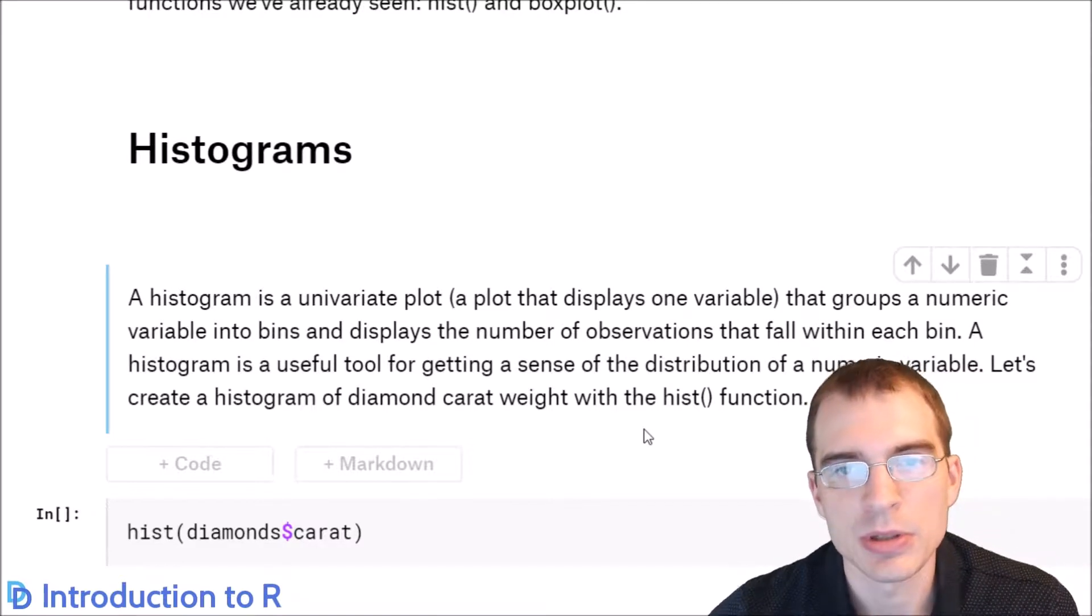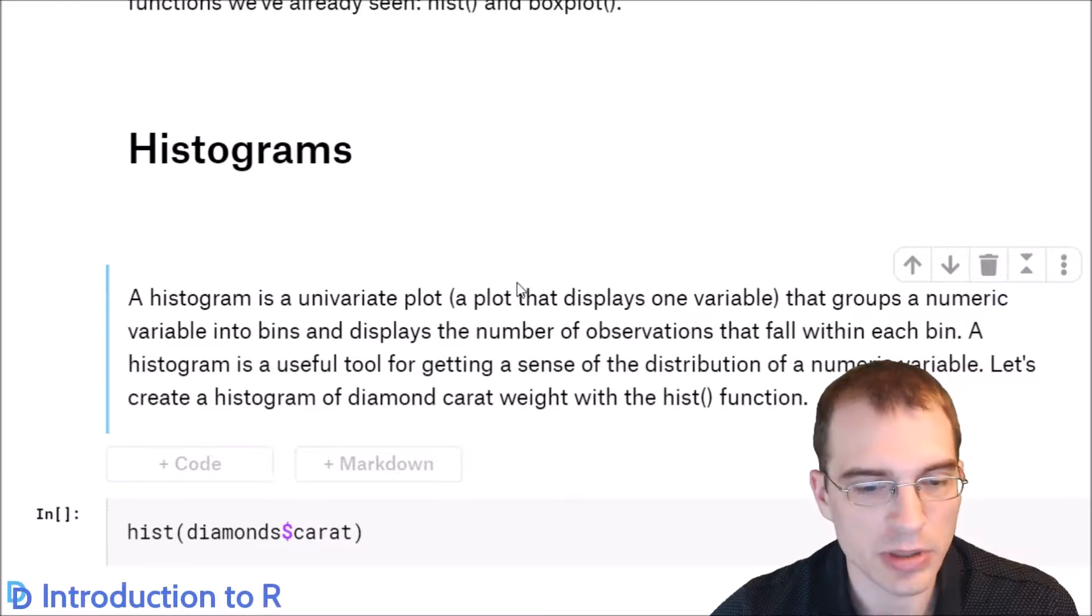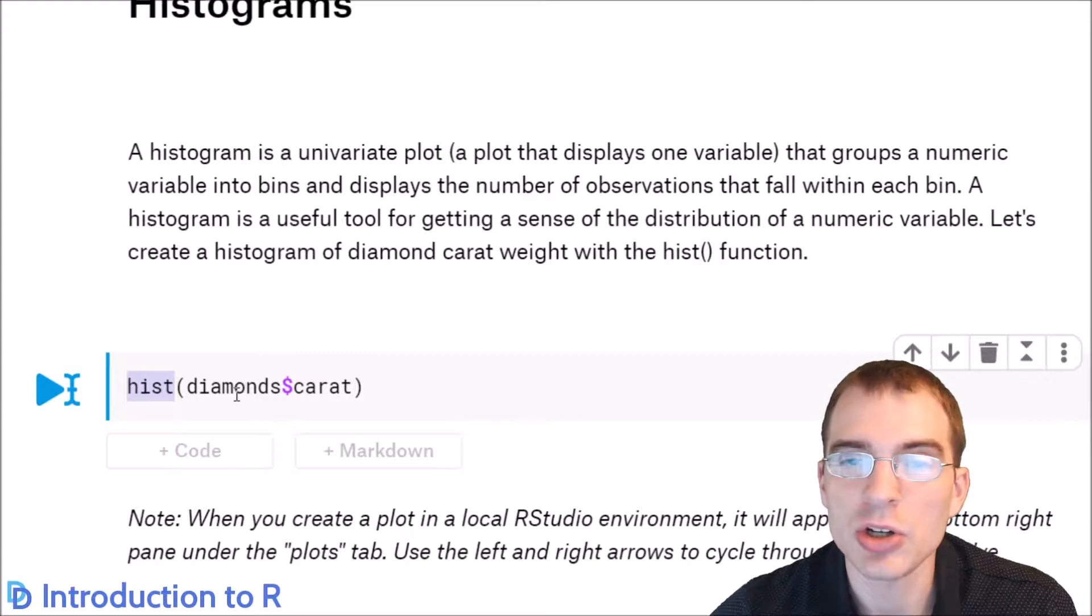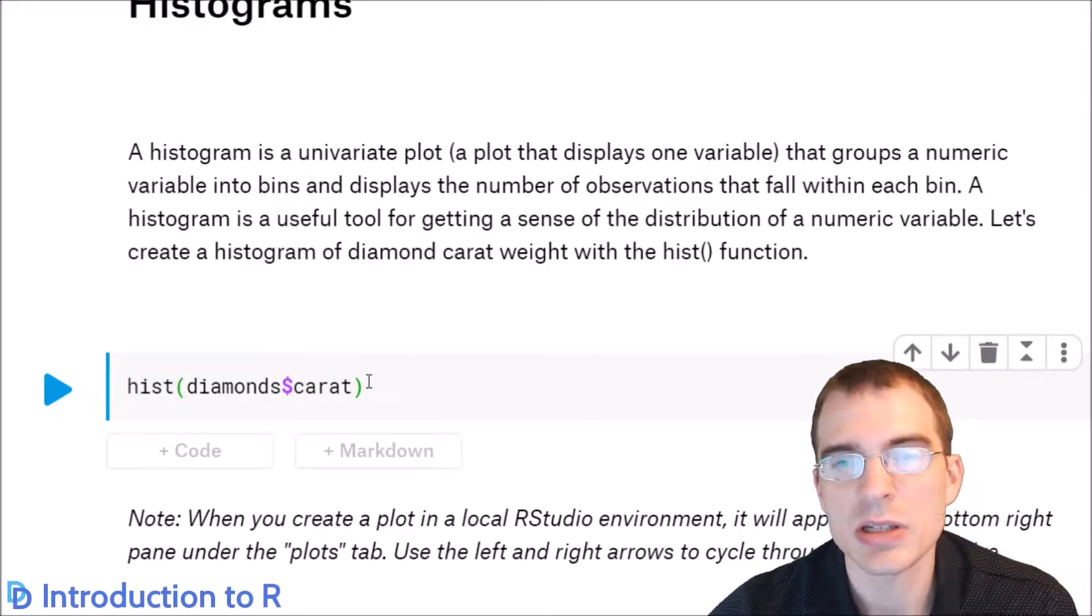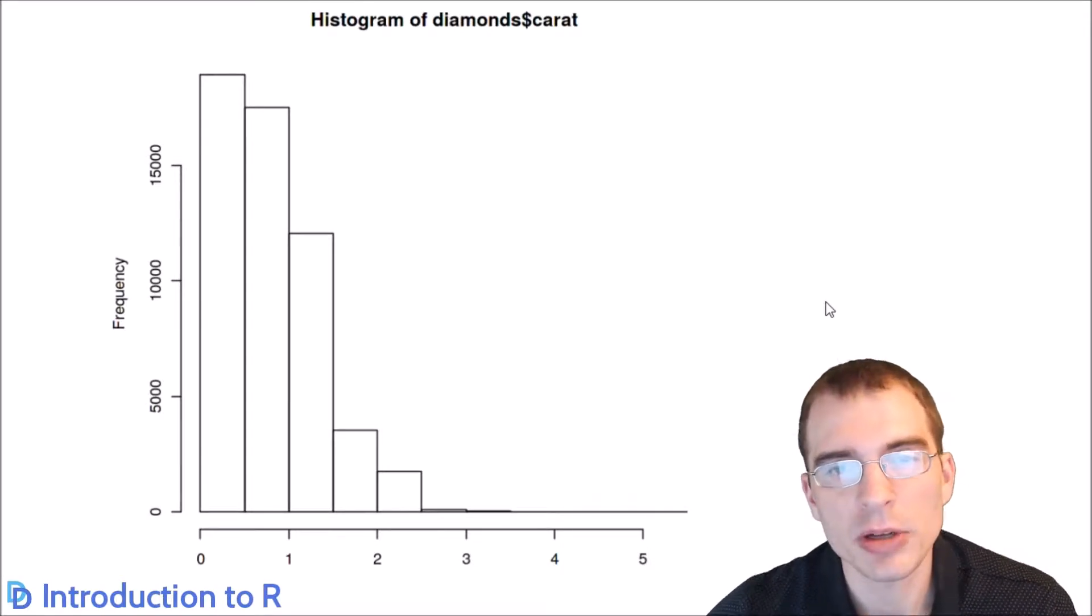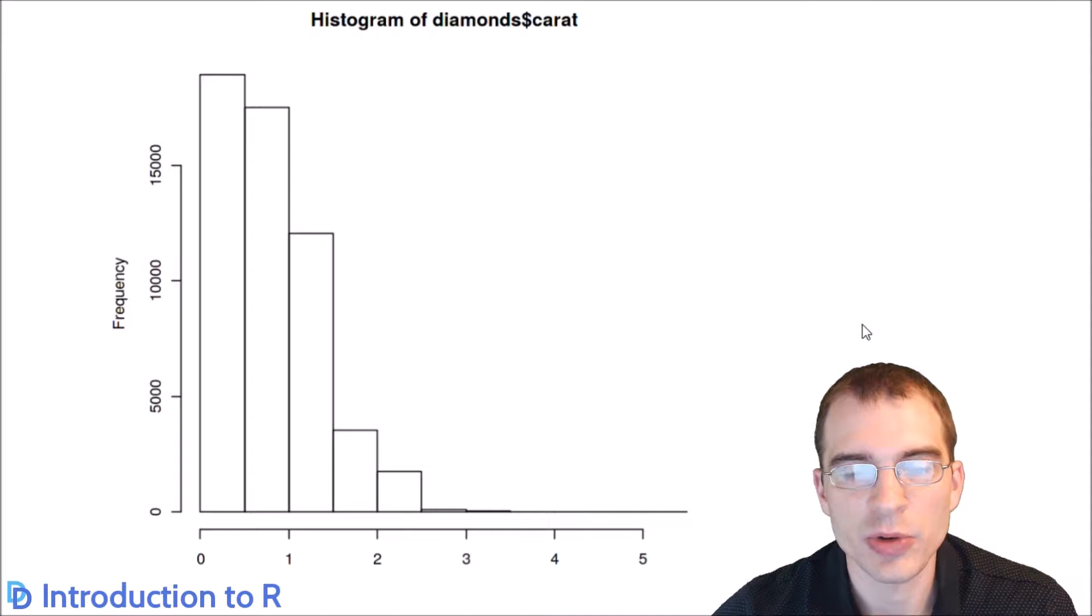A histogram is a univariate plot that shows you the distribution of a variable using bins of different widths that you can set yourself. It might be easiest just to create one so that I can explain it. To create a histogram in Base R, you just use the hist function, and then you pass in whatever variable you want to use for it. This is a plot that you use on numeric variables, so you want to be passing in numerics for this one. So a histogram just shows you the number of observations that fall within different ranges of whatever variable you put on the x-axis.